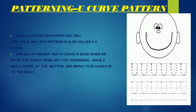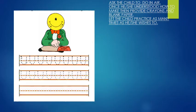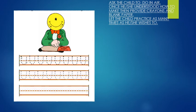And how can we make this pattern, children? We have to move our hands from the left top downward, make a small curve at the bottom, and bring our hands up to the right. Now let's practice it in the air — you have to do it with teacher. We have to move our hands from left top downward, make a small curve at the bottom, and then bring your hands up to the right. Let's practice one more time.